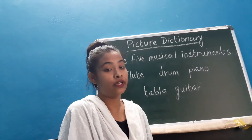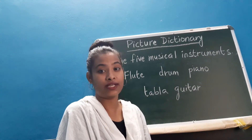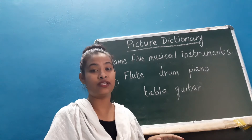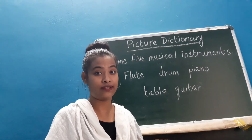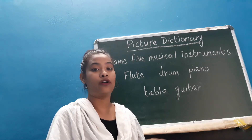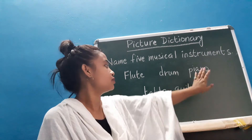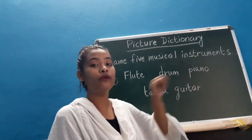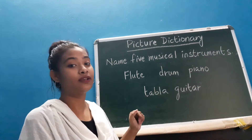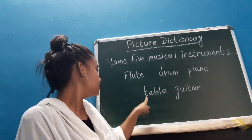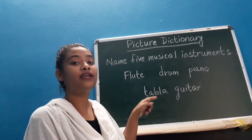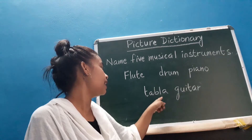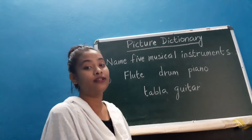In our assembly, you can see our music teacher — he plays piano while we sing our national anthem or our school song. So that is piano: P-I-A-N-O. Now next one is tabla: T-A-B-L-A, tabla. I repeat: T-A-B-L-A, tabla.